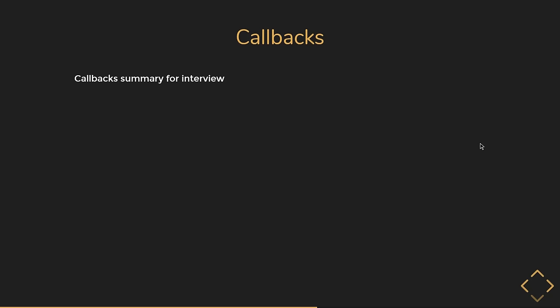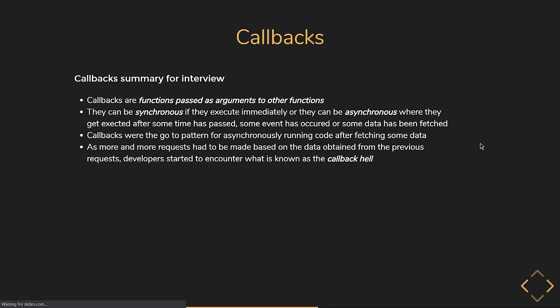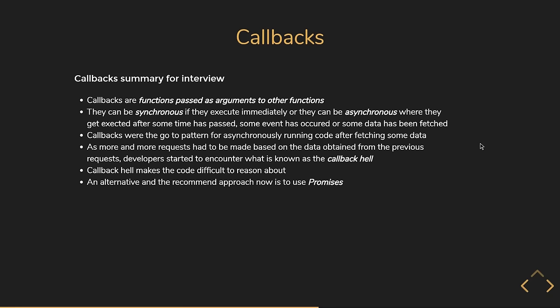To tackle this problem of callback hell, promises were introduced in ES6. Callbacks are functions passed as arguments to other functions — they can be synchronous if they execute immediately, or asynchronous where they get executed after some time has passed, some event has occurred, or some data has been fetched. Callbacks were the go-to pattern for asynchronously running code, but as more requests had to be made based on previous results, developers encountered callback hell, which makes code difficult to reason about. The recommended approach now is to use promises.